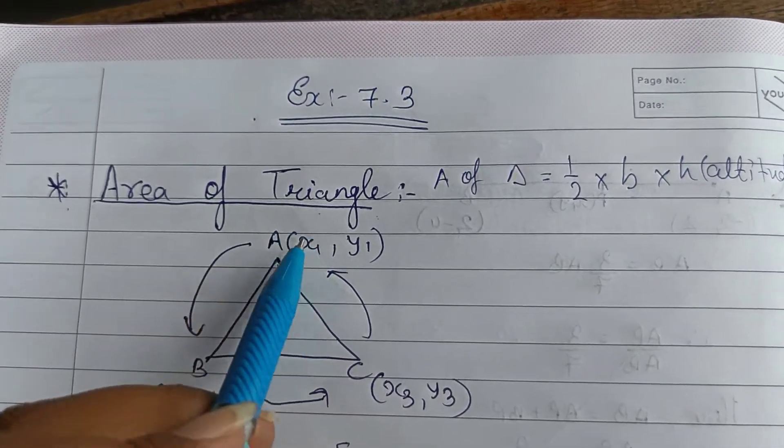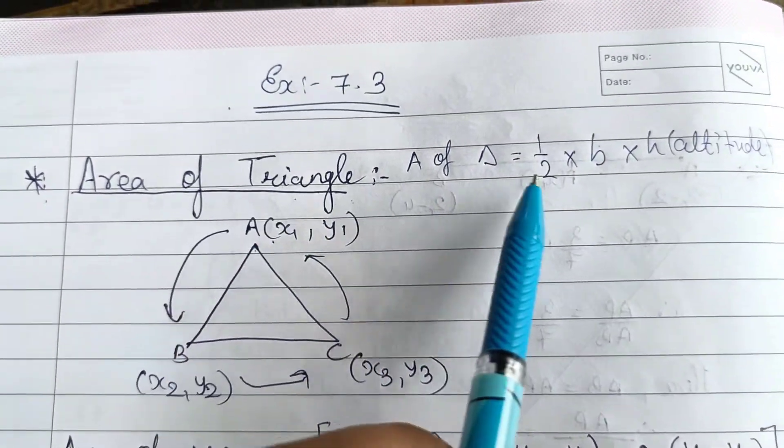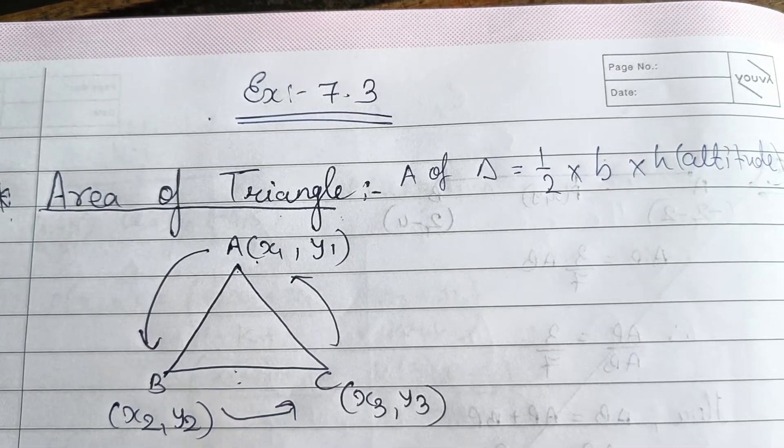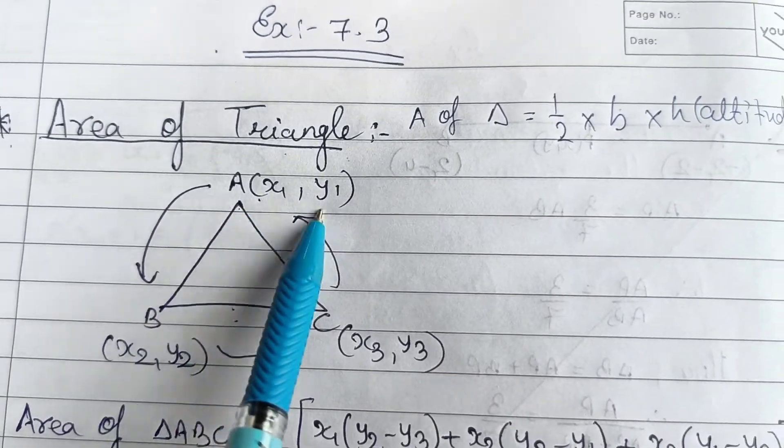But you are having coordinates over here, so you cannot use this. And you are not having any altitude, that is you are not having any height. So how you will find area of triangle for this coordinate form?